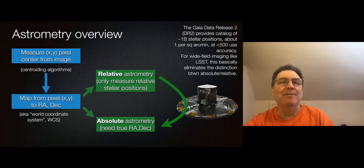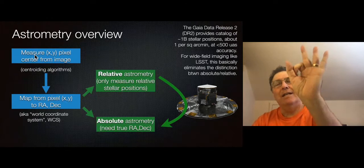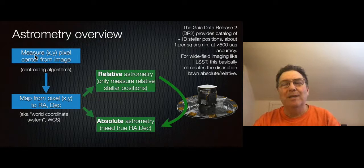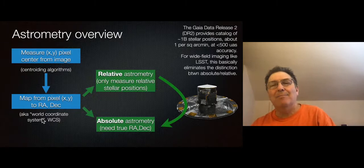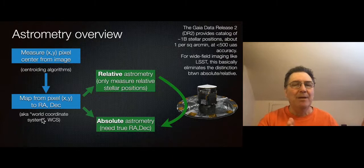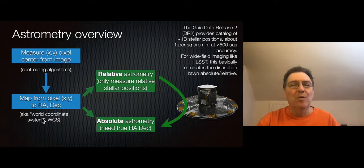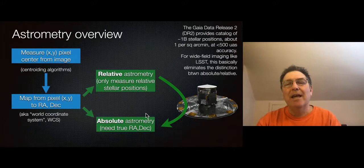There are two major steps to astrometry. First, you take your image and determine the central pixel location of the star — that's a centroid algorithm, which I'll cover first. Second, you need a map from pixel coordinates to actual right ascension and declination on the sky — that's the World Coordinate System, or WCS, a function mapping XY pixel coordinates to RA and DEC. That'll be the latter part of this lecture.